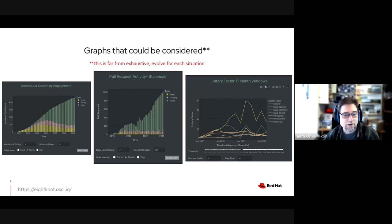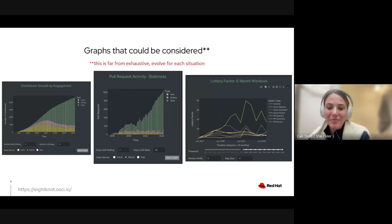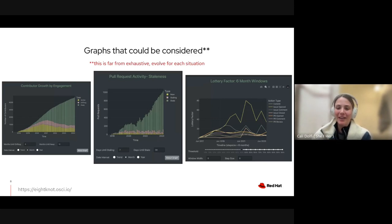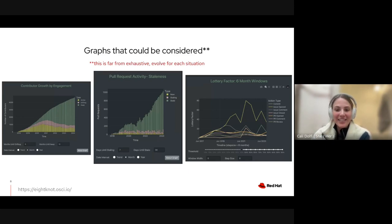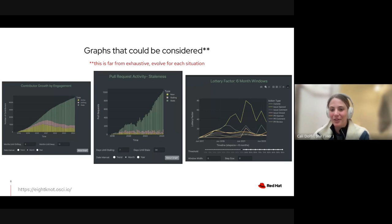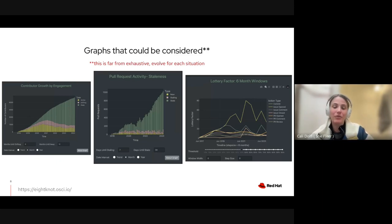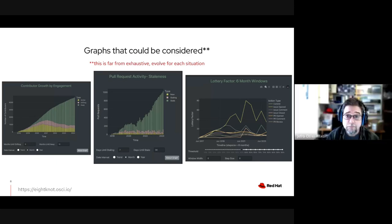One big surprise over the last year is the value of just being able to confirm that something is happening — allowing conversations to move from 'is this happening?' to 'we can confirm it is, now what are we going to do?' That allows things to move faster and get out of a stalling phase. The lottery factor analogy is: if one or two people won the lottery today and decided to never open their computer again, what would the impact on the community be? It's about understanding the impact if a couple of key people suddenly leave.